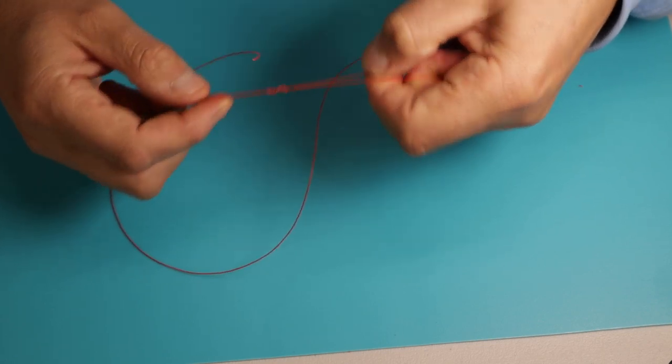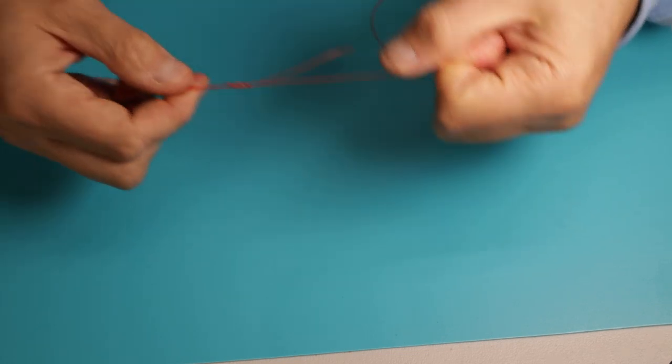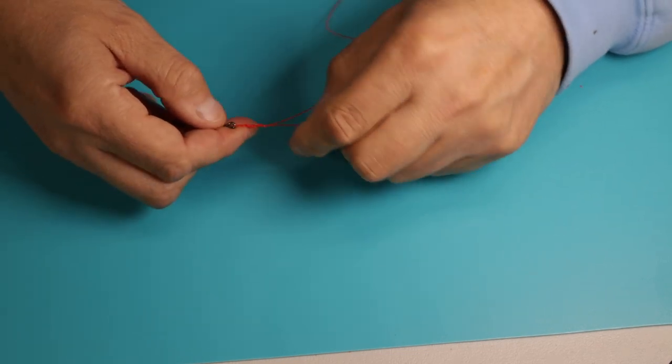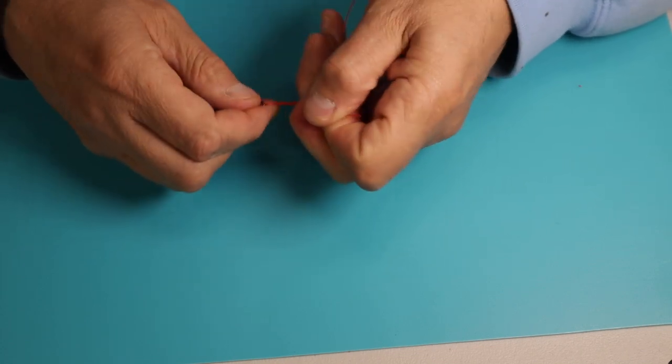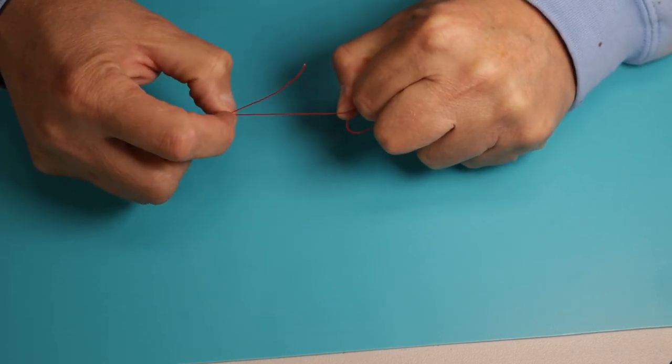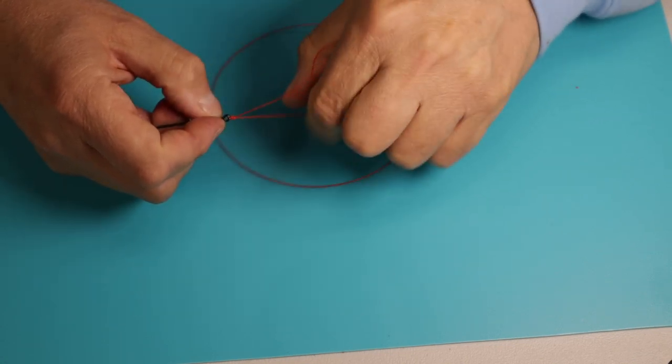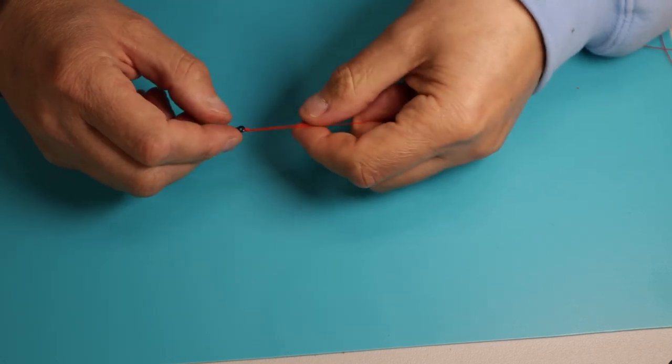Once you've started to form your knot and it's coming together, lubricate your line and then start to cinch down and form your knot. Taking care that it shapes itself correctly and doesn't put any abnormal twists. And there you have it. That is a three turn grinner.